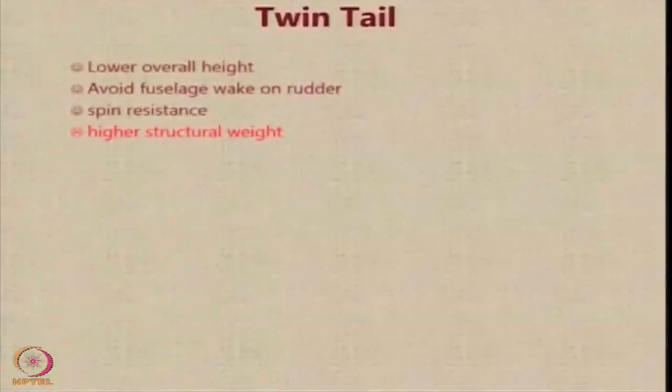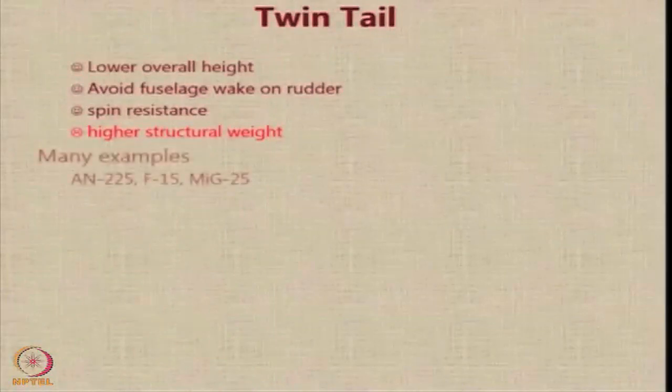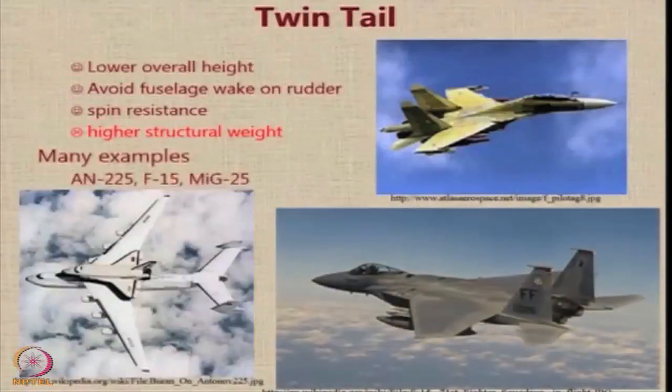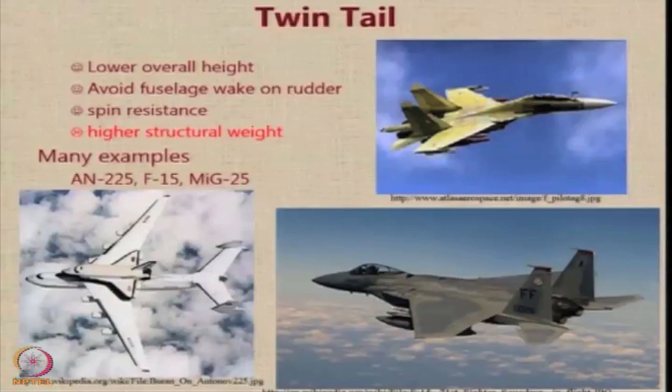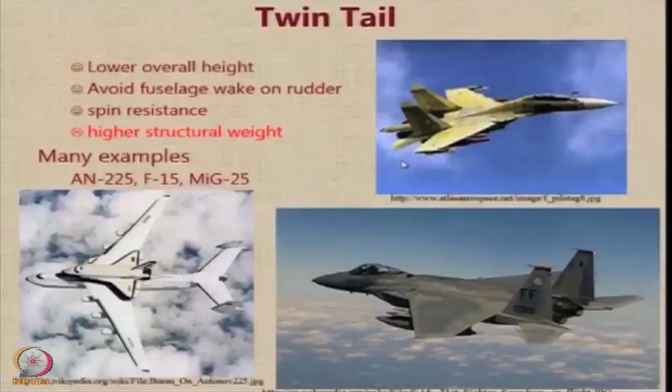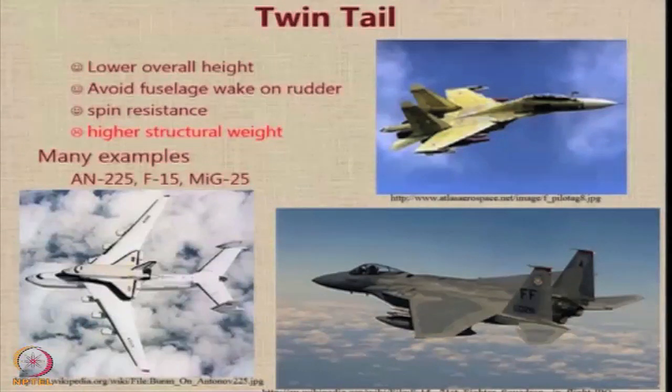The twin tail is very common in military aircraft. Generally, a twin tail is given if you would like to reduce the height of the tail — instead of one big tail, you can put two tails. It also helps in spin resistance, but it gives you higher structural weight. Many military aircraft, especially fighters with very high performance requirements in turning flight, go for a twin tail configuration.